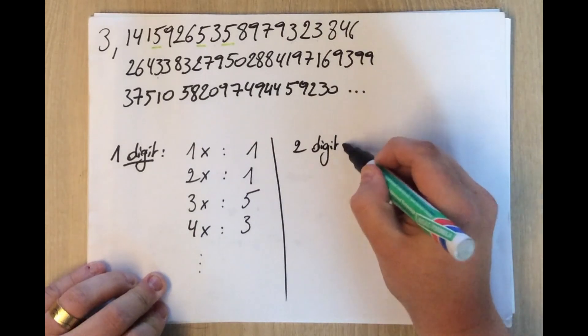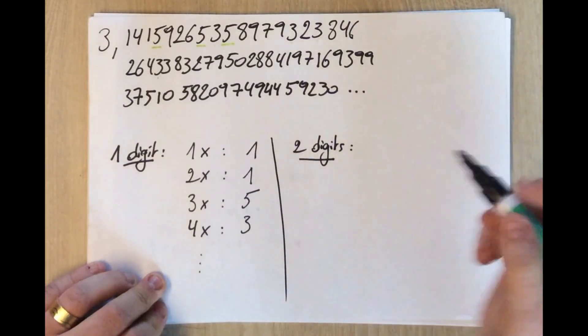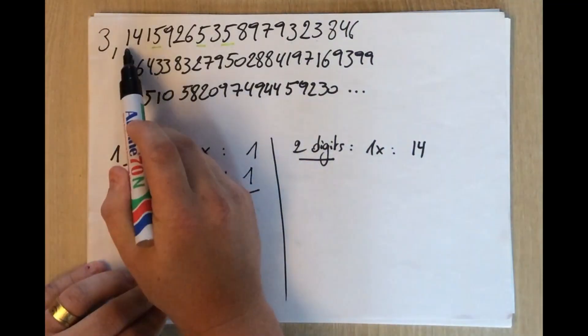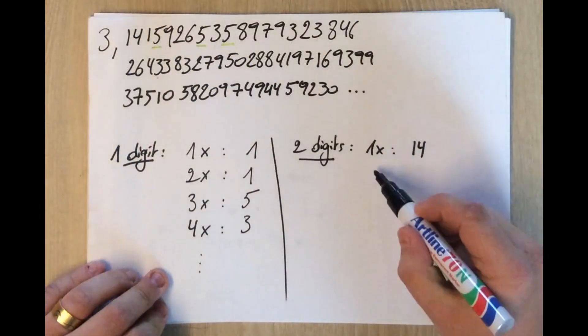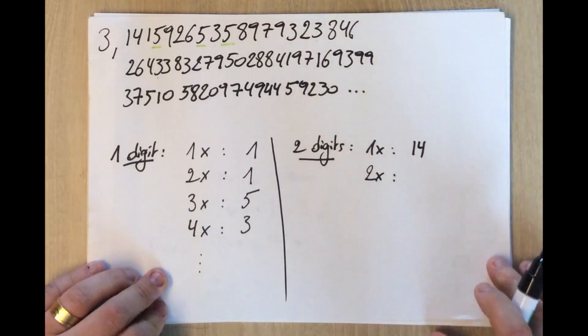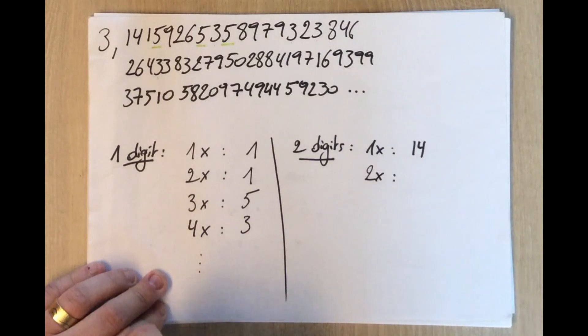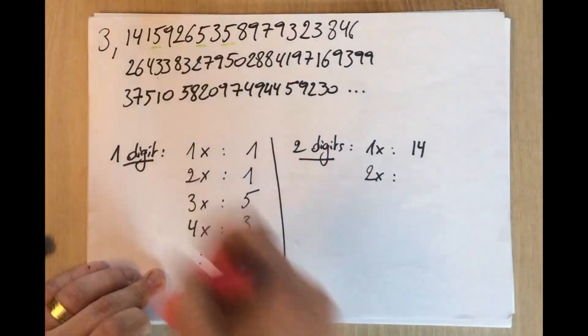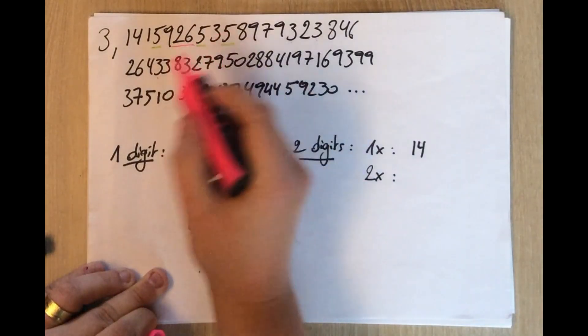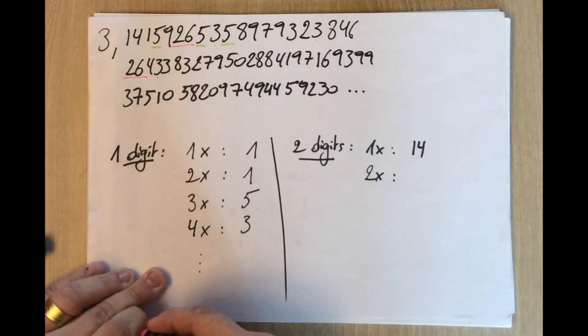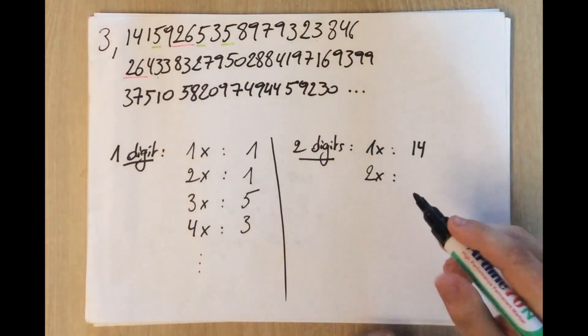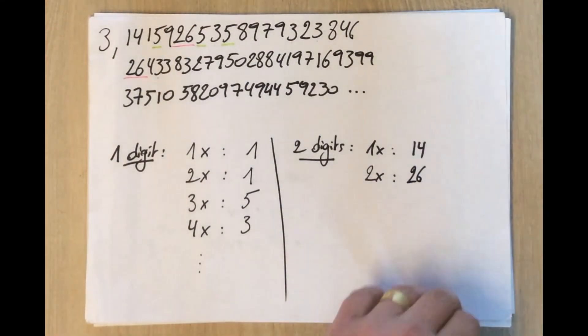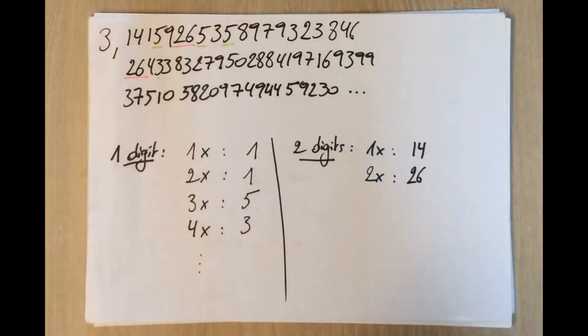Let's look at numbers with two digits. The first is 14, obviously, again, starting at the first position after the decimal point. That's obvious. The first one to appear two times, we'll have to look for it. And you can see that we have 26 over here and 26 over here. And that's the first one appearing two times. You can check it. There's no other two-digit number appearing twice before 26 does.